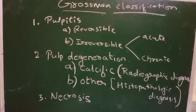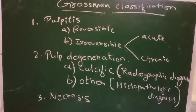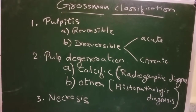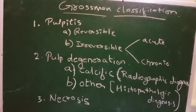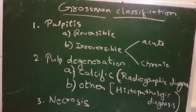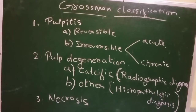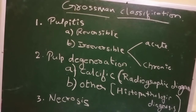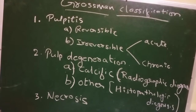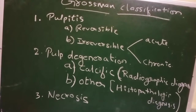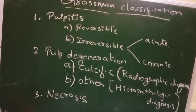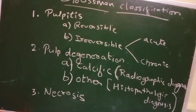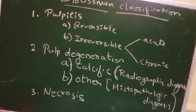We will study the classification. The common classification is the Grossman classification, where we have Pulpitis divided into reversible Pulpitis and irreversible Pulpitis. In reversible Pulpitis, there might be symptomatic and asymptomatic forms. In irreversible Pulpitis, we have acute and chronic. In acute, it may be abnormally responsive to cold or heat. In chronic, we have symptomatic pulpal with pulp exposure, hyperplastic pulpitis, or internal resorption of the pulp.